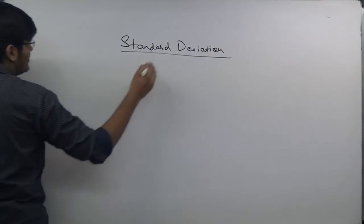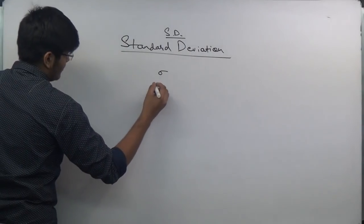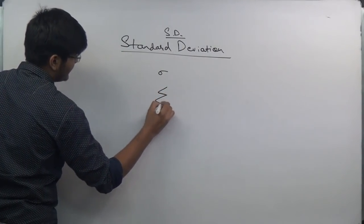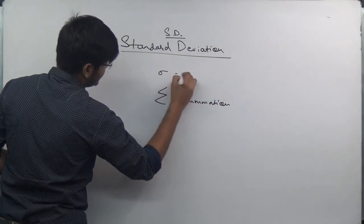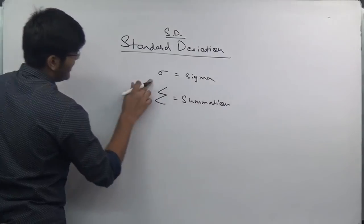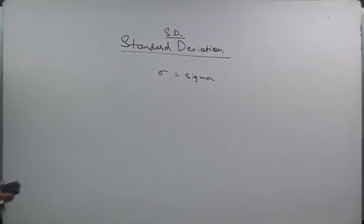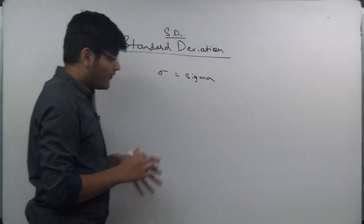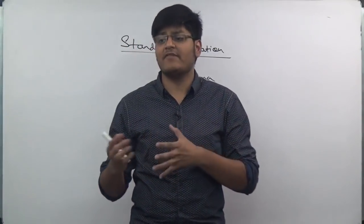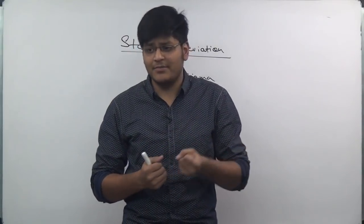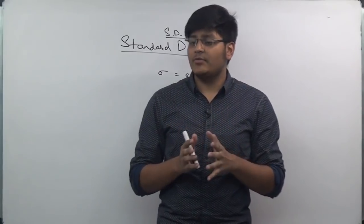Standard deviation, short form SD, is denoted by the alphabet sigma (σ). A common confusion is between sigma and summation — sigma denotes standard deviation while summation (Σ) denotes the sum total of a given series. There are a lot of formulas concerning standard deviation — sometimes six to seven formulas in a book — such as actual mean method, direct mean method, continuous series method, grouped and ungrouped methods.